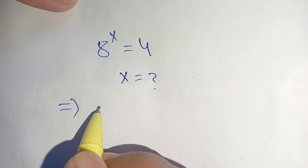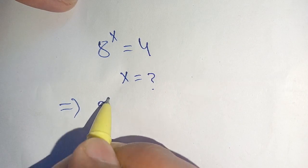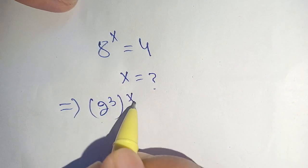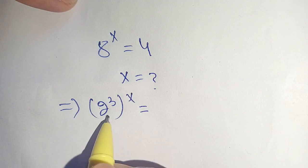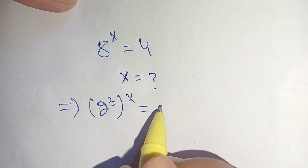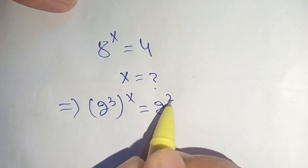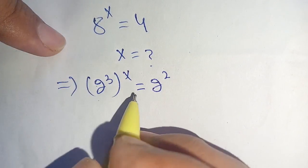We write down 8 equals 2 to the power 3, in brackets to the power x, equals 4. This can be written in terms of 2 and it is equal to 2 to the power 2.